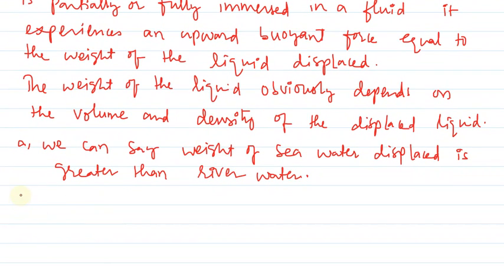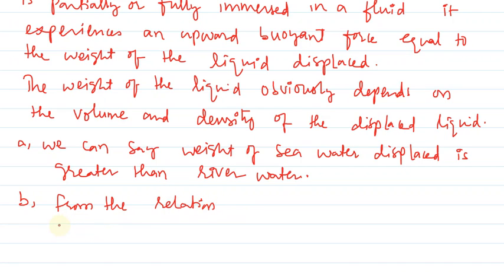Let us go with question B. In question B, we can say: greater the density, easier to swim. From the relation, buoyant force equals the volume of the liquid multiplied by the density of the liquid multiplied by the acceleration due to gravity.